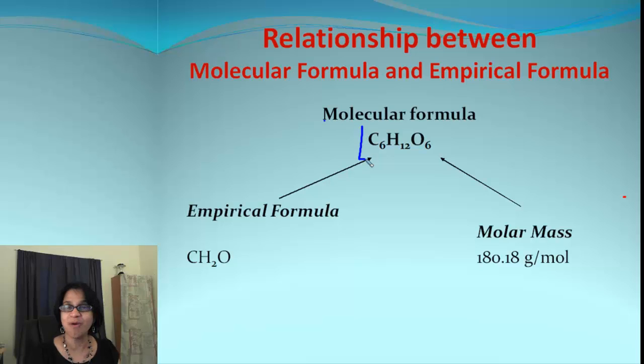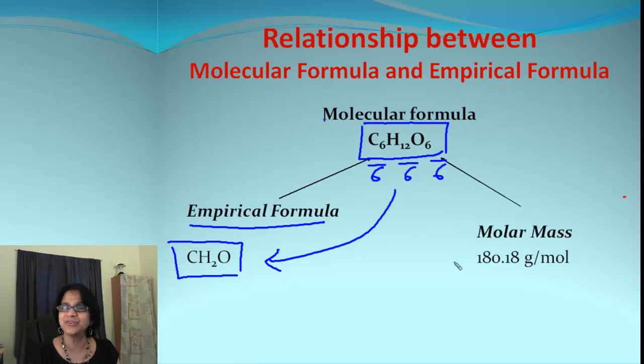So we have a molecular formula here C6H12O6 and this is the empirical formula for same compound. How did we get that formula? We have 6, 12 and 6 atoms of carbon, hydrogen. What happens when we divide each of those by 6?